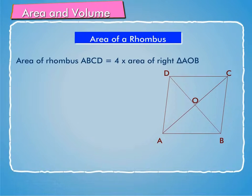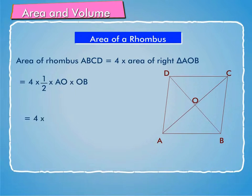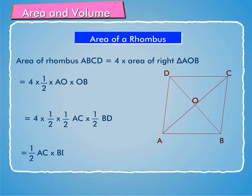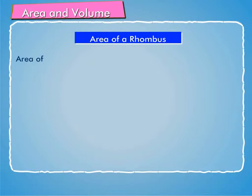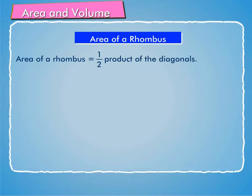Area of rhombus ABCD given on screen is equal to 4 × area of right triangle AOB = 4 × (1/2) × AO × OB = 4 × (1/2) × (1/2)AC × (1/2)BD = (1/2) × AC × BD. Hence, area of a rhombus is equal to 1/2 into the product of the diagonals.